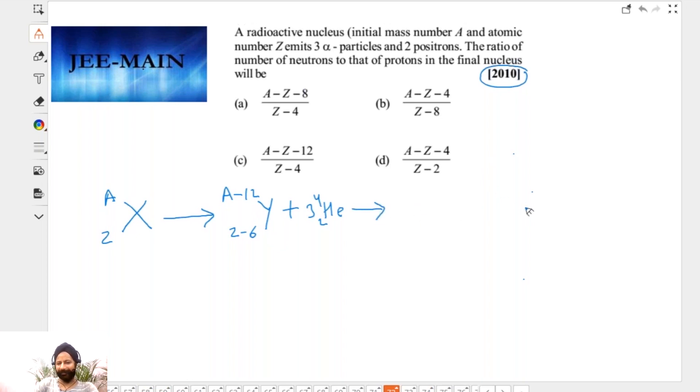Ab kya ho raha, is ke baad it emits out two positrons. Positron is 0, +1. To isma kya ho jayega? Z doesn't change, A minus 12 doesn't change. Mass number doesn't change, but Z will change. Z plus 2 aagaya. So this becomes Z minus 6 plus 2... sorry, sorry, Z minus 8, because proton, two protons have been converted into neutrons. Neutrons increase now. A positron is what? Proton converts into a positron and a neutron. So proton is gone, neutron is born. Any doubts?